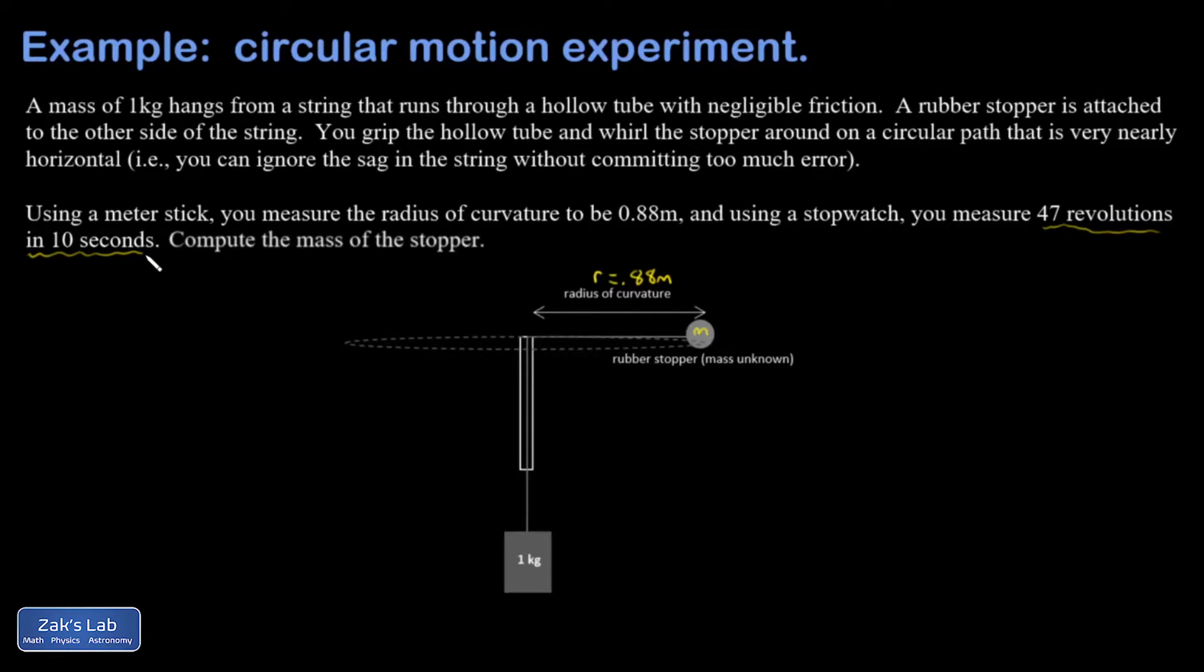I know the formula for centripetal acceleration can be phrased in terms of the period. So I'll start by figuring out the period of revolution. Period means seconds per revolution, so I'm going to set it up as 10 seconds over 47 revolutions. Reducing that to a decimal, I get 0.213 seconds. I'll keep a few sig figs on that, and then start thinking about force diagrams.